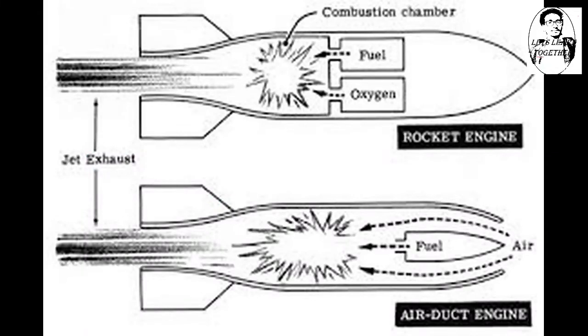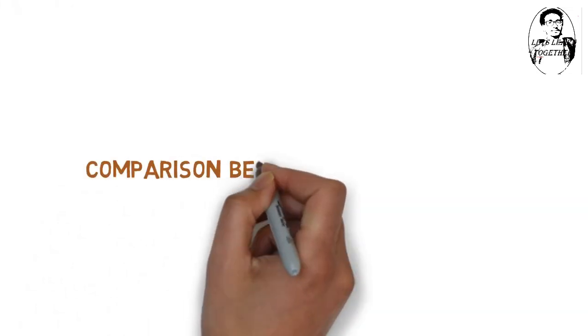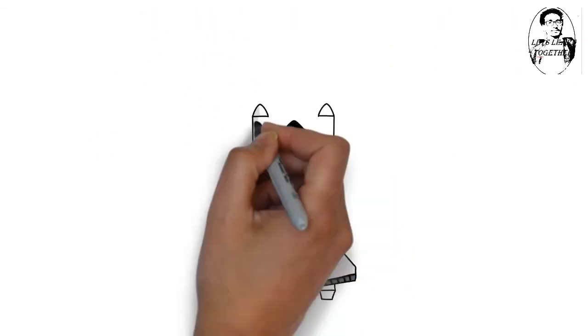In a rocket engine, fuel and a source of oxygen called an oxidizer are mixed and exploded in a combustion chamber. The combustion produces hot exhaust which is passed through a nozzle to accelerate the flow and produce thrust. There are two main categories of rocket engines: liquid rockets and solid rockets.